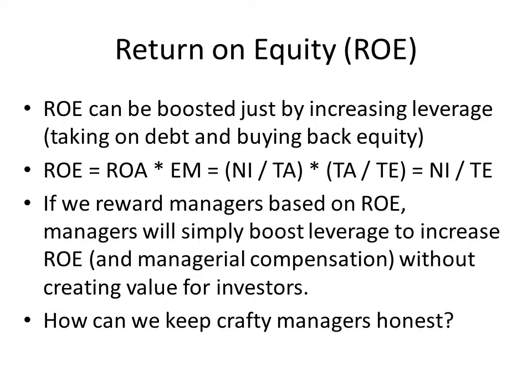As we discussed in a previous lecture, return on equity, or ROE, can be boosted just by increasing leverage or debt. We can decompose ROE into two components: ROA, or return on assets, and EM, which stands for equity multiplier. The formula for ROA is net income over total assets, and the formula for equity multiplier is total assets divided by total equity. If we multiply these together, total assets cancel out, leaving us net income over total equity, which is, in fact, ROE.